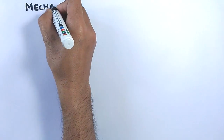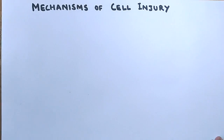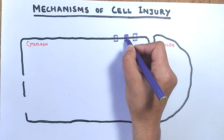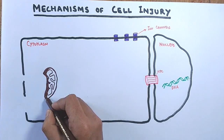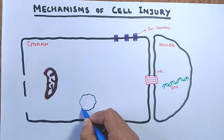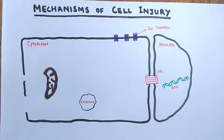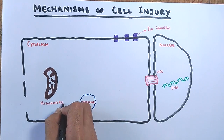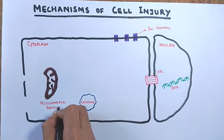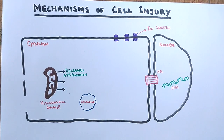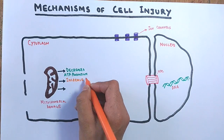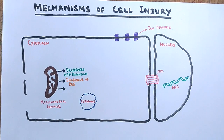In this video we will be discussing mechanisms of cell injury. Cell injury occurs via multiple processes, but the major ones involve the mitochondria, lysosomes, and the nucleus. Mitochondria sometimes malfunction or get internal damage, which decreases ATP production, followed by an increase in the production of ROS — reactive oxygen species.